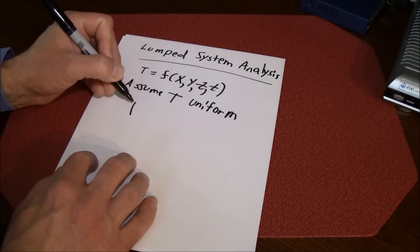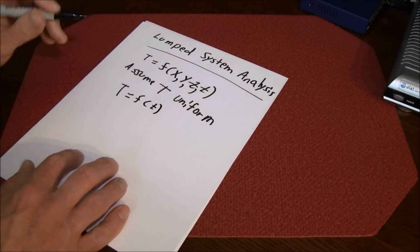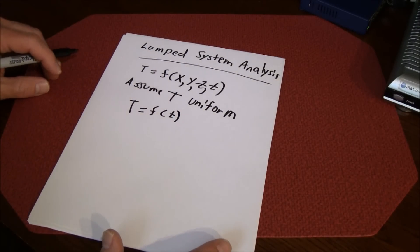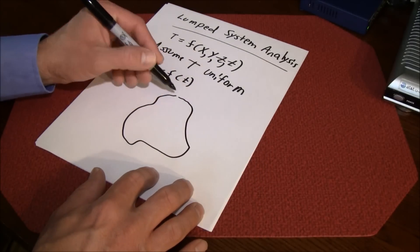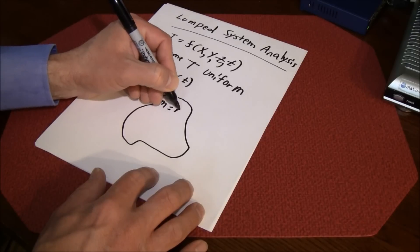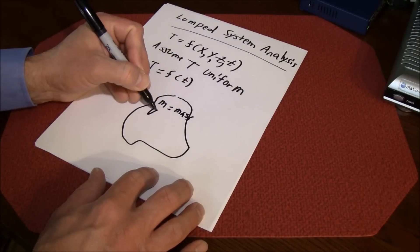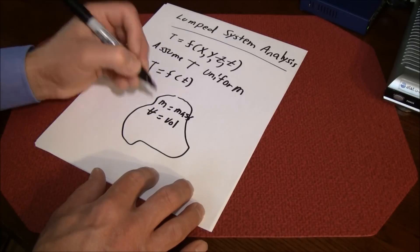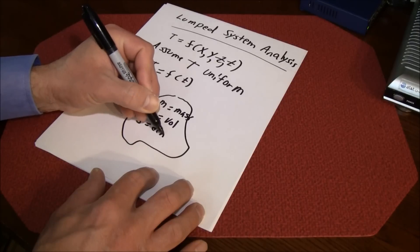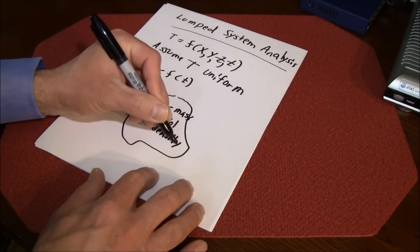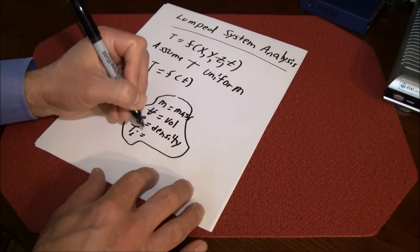If we consider a body here just of arbitrary shape, the body may have some mass m, volume V, maybe some density rho, and some initial temperature we'll call T sub i.